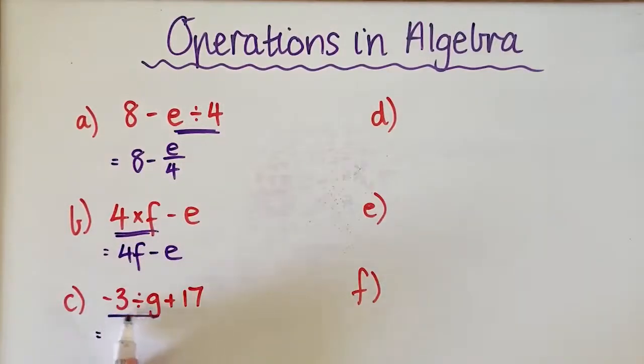For this one, the division gets combined together, but we don't combine the addition. So it becomes negative 3 over G plus 17.